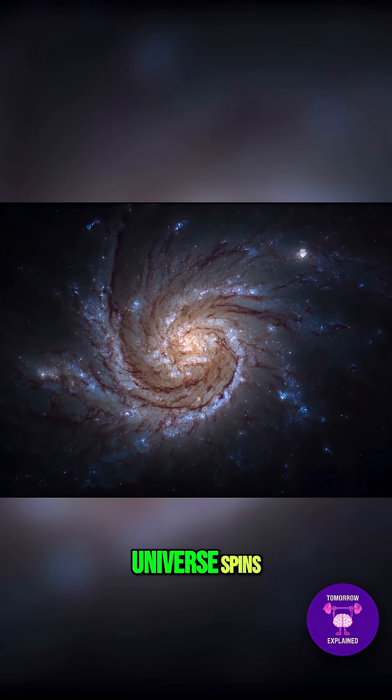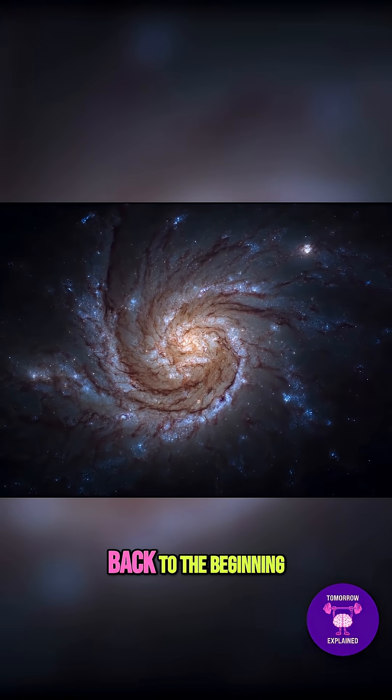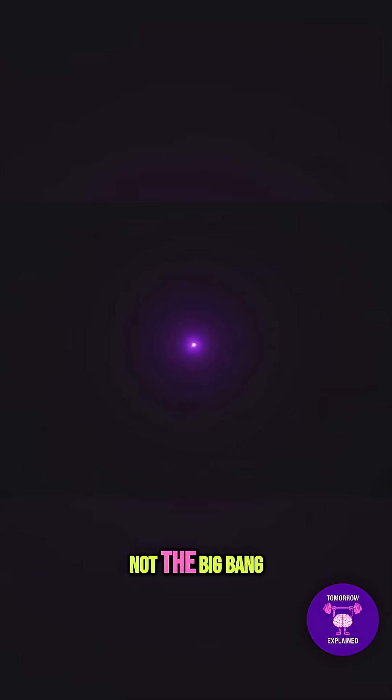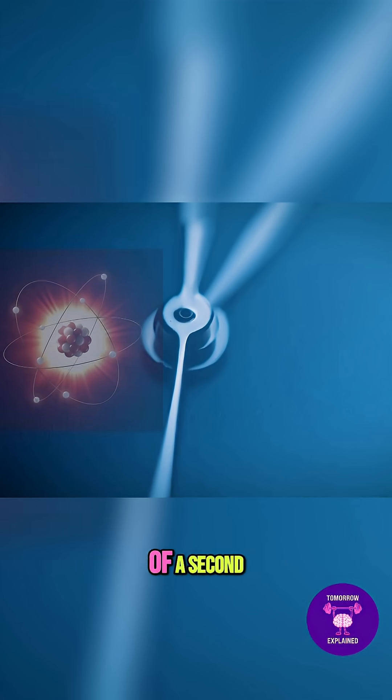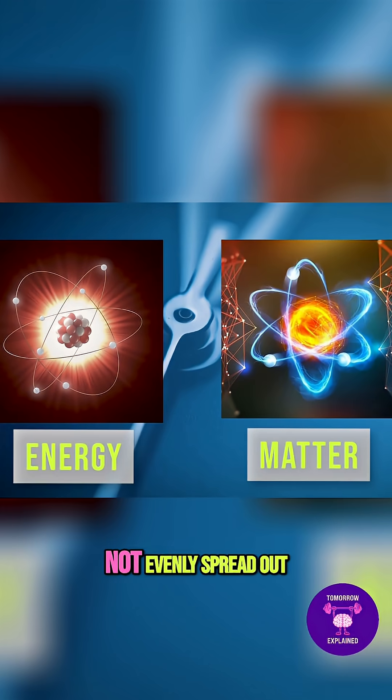To understand why the universe spins, we have to go back to the beginning. Not the Big Bang itself, but the tiny quantum fluctuations before it. In the first fractions of a second, energy and matter were not evenly spread out.